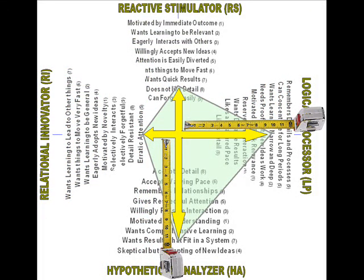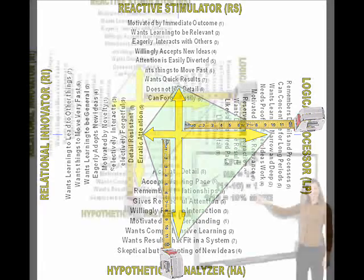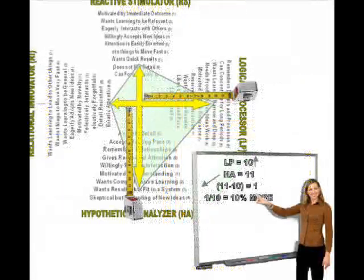IOP is unique in that it measures things on a ratio scale — like a ruler. A ratio scale allows IOP to use arithmetic. And that means you can do things like add, subtract, multiply, and divide. If you can do that, you can calculate behavioral probabilities.